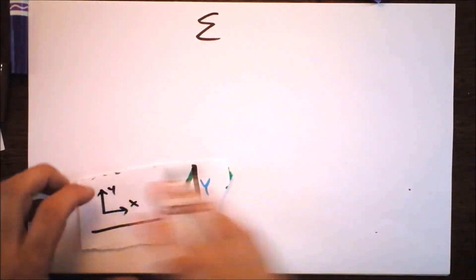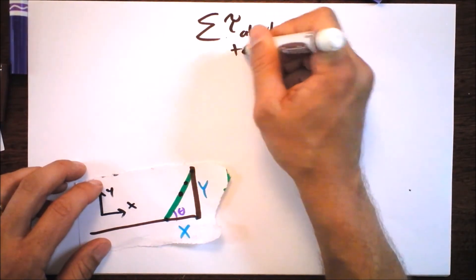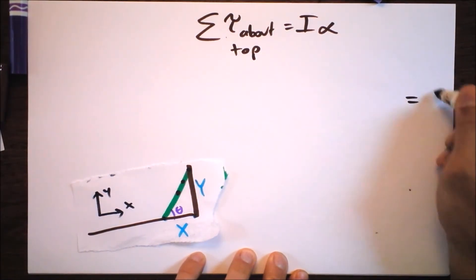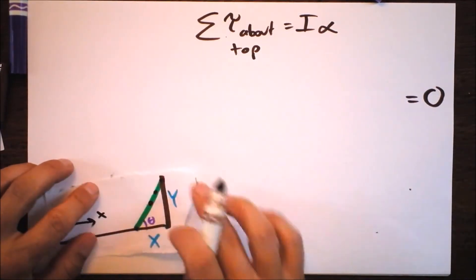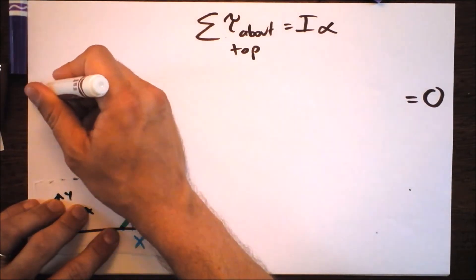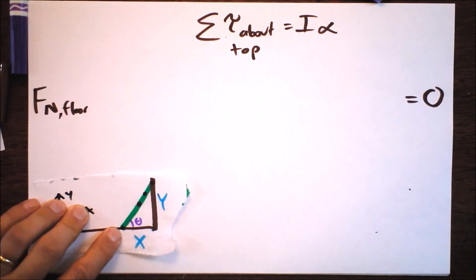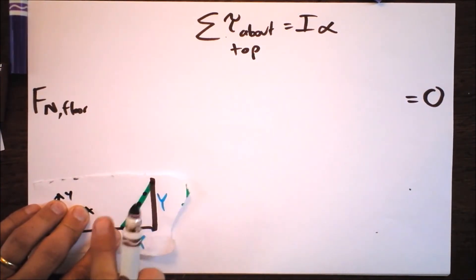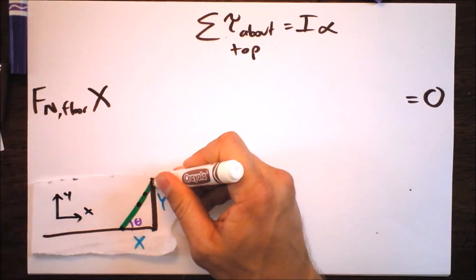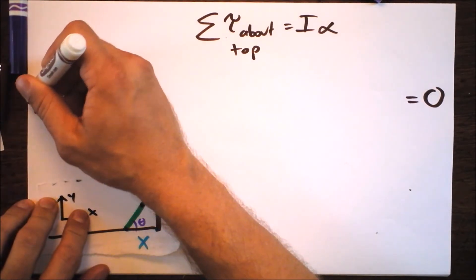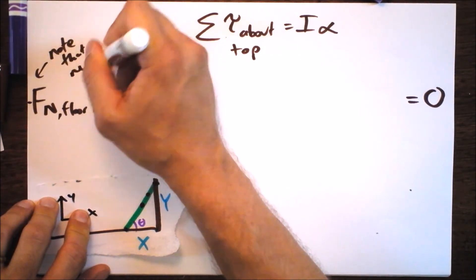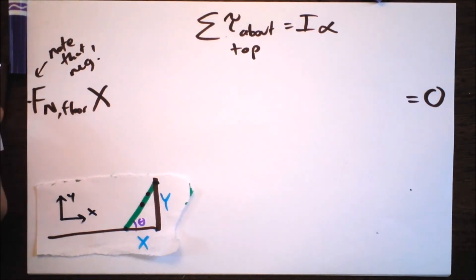I will write that the net torque about the top equals I times alpha, and we're going to say, again, it's a statics problem. Again, the answer is zero. So let's identify all the torques about the top. Down at the bottom, there are two forces. One of them is the normal force. I'm going to write down the normal force at the floor. Then I have to multiply that by how far out it acts right here. It's acting a distance x away, but if this is the axis of rotation and there's a force upward here, that causes a clockwise rotation. So I need a minus sign right there.